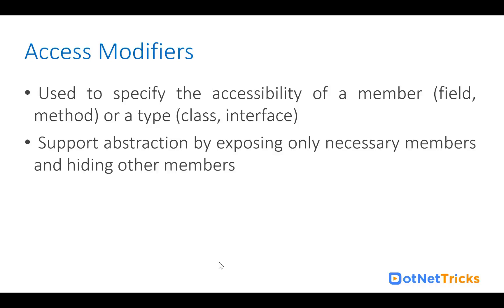Access modifiers support abstraction as well by exposing only necessary members and hiding others. When we create a class and define members, some members we make private and some we make public. The members we make private are the ones we are hiding, and we only expose the members that are necessary.